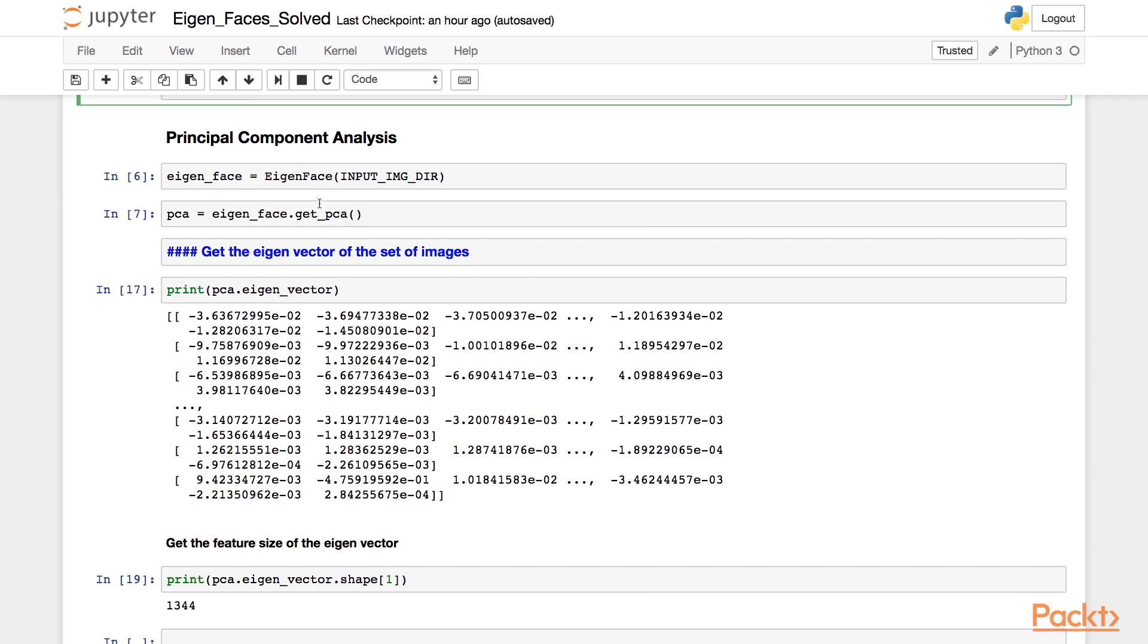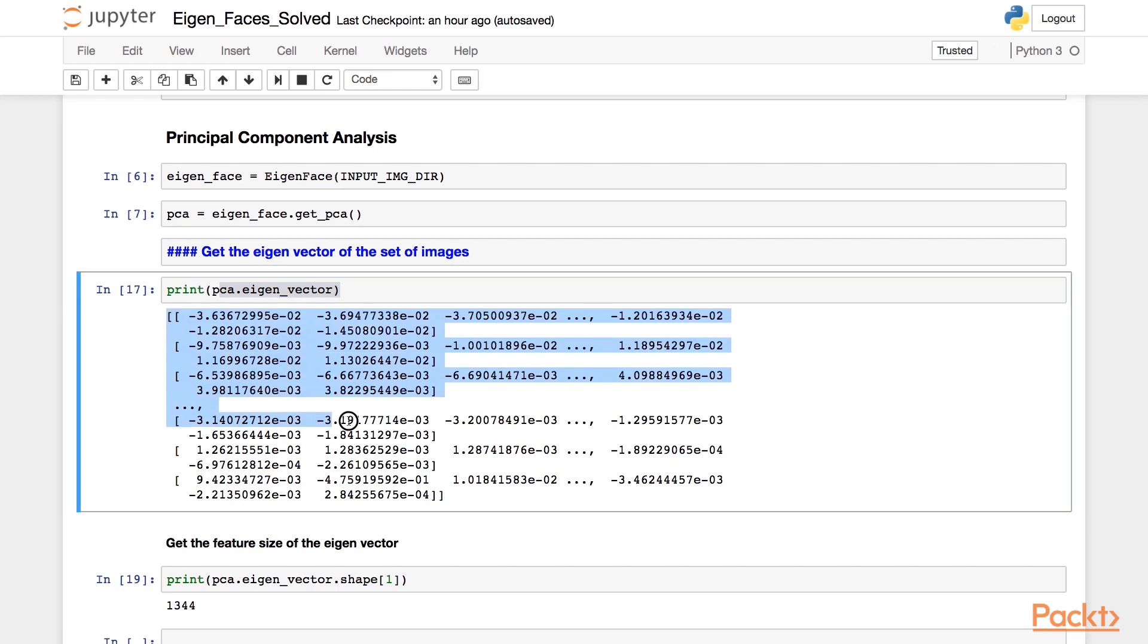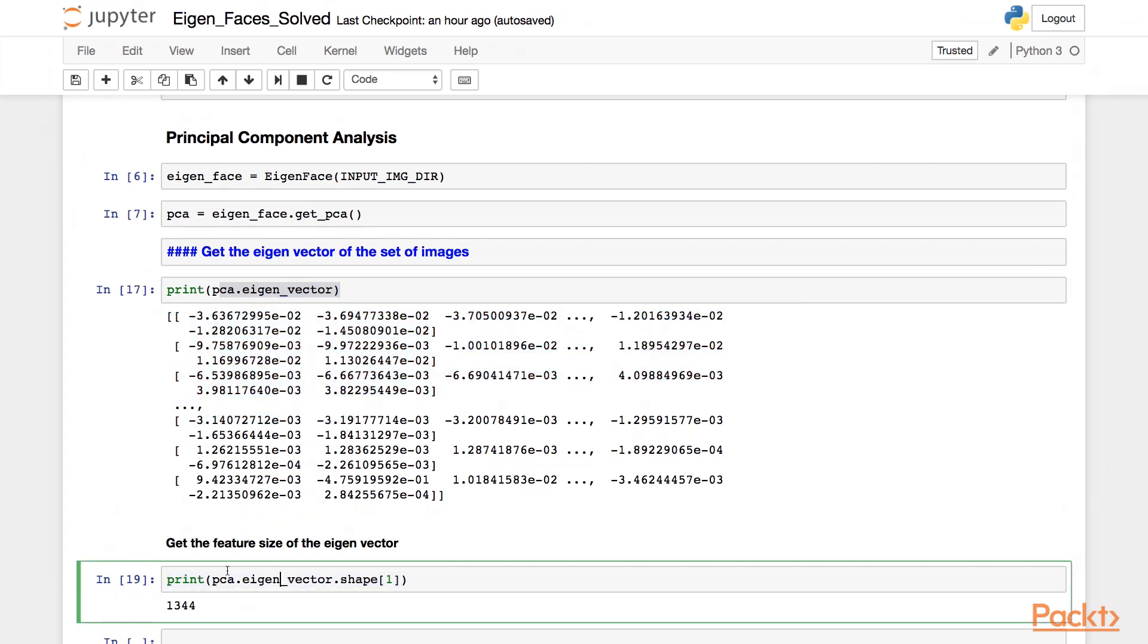Here is the output of the above API. We first input the Yale images, then we perform PCA and get the eigenvectors. These are the eigenvectors of the images of a sample of the Yale dataset. We can also find the feature size of each eigenvector, which is 1344. Therefore, we can also set a value K and decrease the feature size to K, and the PCA of every unique image remains unique.